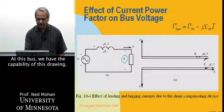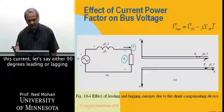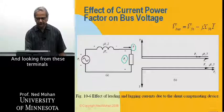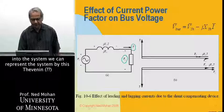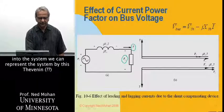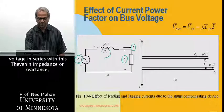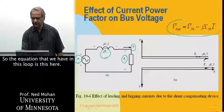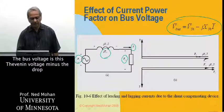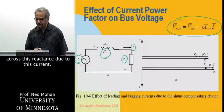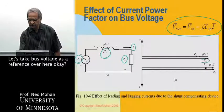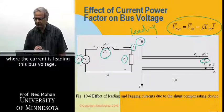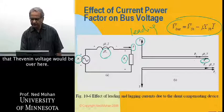At this bus, we have the capability of drawing a current that is either 90 degrees leading or lagging with respect to the bus voltage. Looking from these terminals into the system, we can represent the system by a Thevenin voltage in series with a Thevenin reactance X_Thevenin. The equation in this loop is that the bus voltage equals the Thevenin voltage minus the voltage drop across this reactance due to this current. Taking bus voltage as a reference, with the current leading, the Thevenin voltage would be positioned as shown.